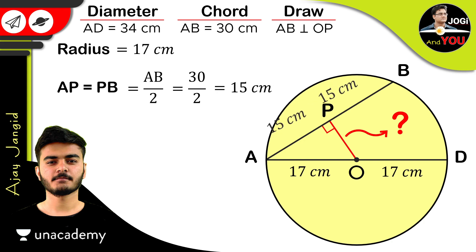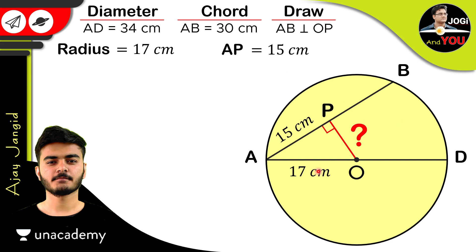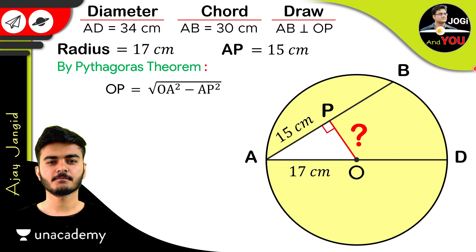Now replacing these values in our figure, we have a right-angle triangle with sides AP = 15 cm, OA = 17 cm (the radius), and the unknown OP. In a right-angle triangle, Pythagoras' theorem gives us: one side equals the square root of the hypotenuse squared minus the other side squared. So our calculation is OP = √(17² − 15²).